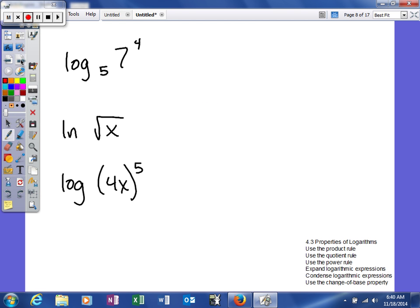So we'll look at a couple examples. The first one is the log base b of 7 to the 4th power. Since we have an exponent on what we're taking the log of, we can rewrite that as a coefficient. If we could simplify this we would, but unfortunately that's not a rational number, so we're just going to leave it.